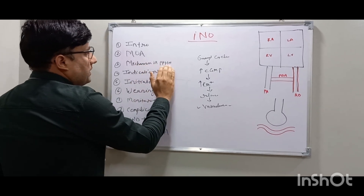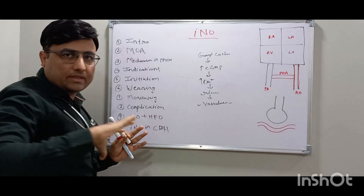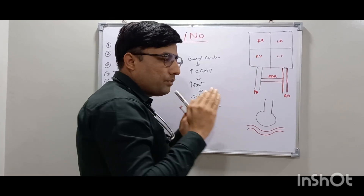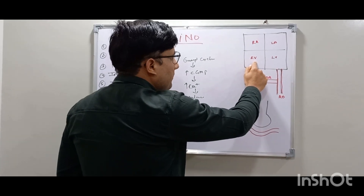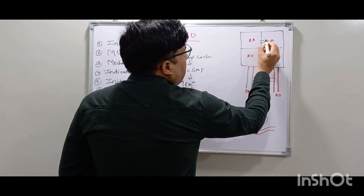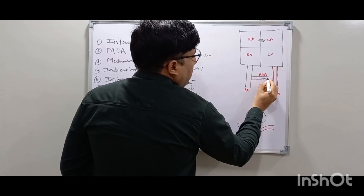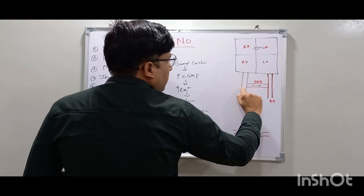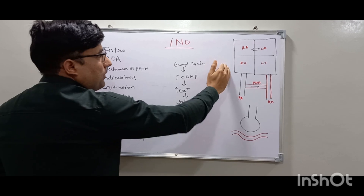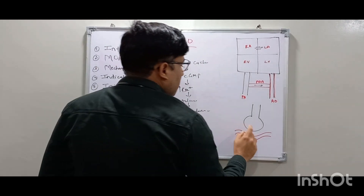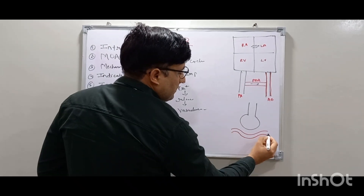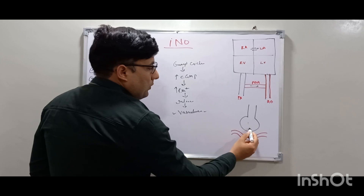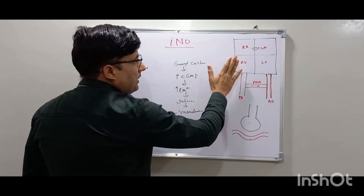Now, how does iNO act in PPHN? In PPHN, pulmonary pressures are persistently high, causing right-to-left shunting at the PFO and PDA — this is extrapulmonary shunting. Additionally, there is intrapulmonary shunting: pulmonary vascular resistance is high so ventilation is present but perfusion is absent, meaning gas exchange does not occur — this is dead space ventilation. So in PPHN, both extrapulmonary and intrapulmonary shunting are occurring.